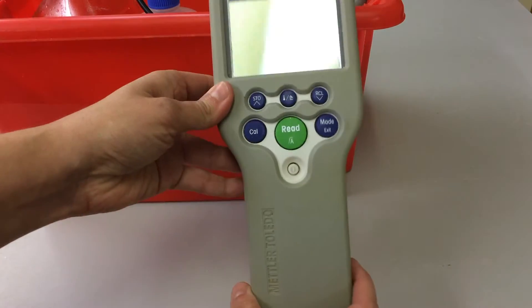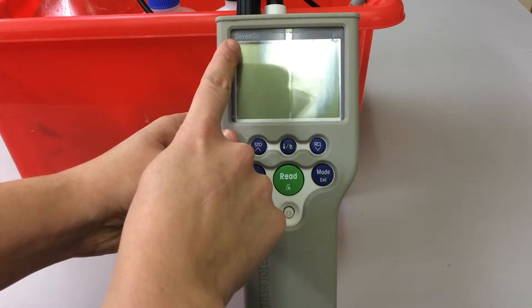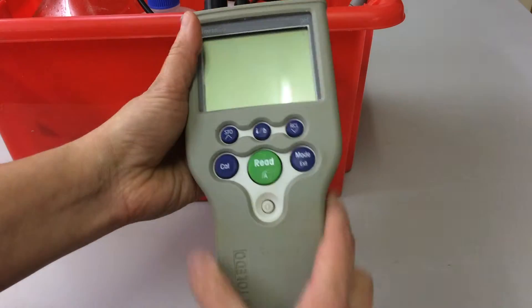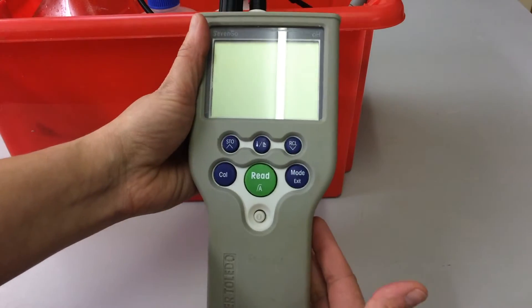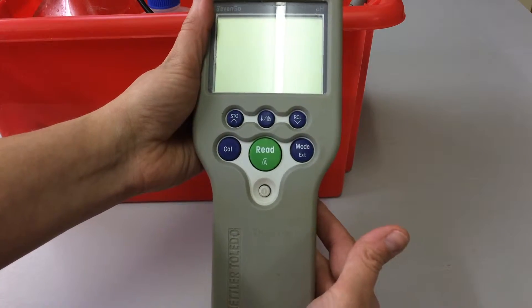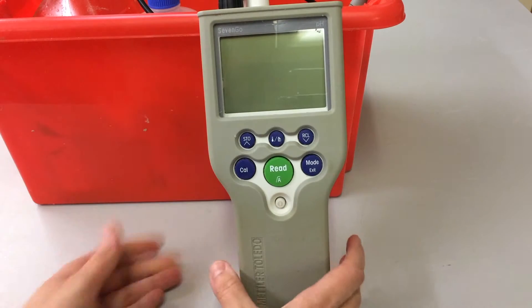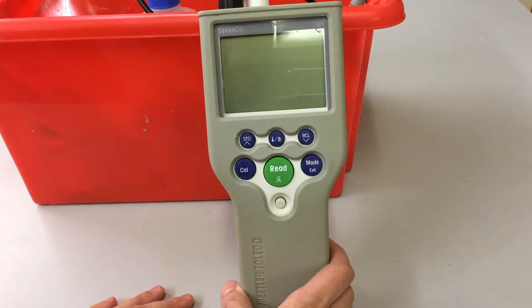This is the Mettler Toledo 7 Go pH meter. As you can see, it's a handheld device which is very useful because it means you can take it into the field or you can take it across various tanks that you may need to measure the pH in, so it's very versatile.